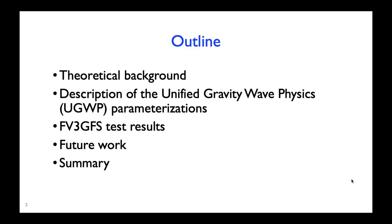The first part of the talk will be a review of some of the physical concepts of gravity wave drag in the atmosphere, particularly that which is influenced by topography. This will be followed by a description of the parameterizations used to represent these processes on the unresolved subgrid scale. Then I'll present preliminary test results from the FV3 GFS model runs, describe possibilities for future work, and provide a brief summary.